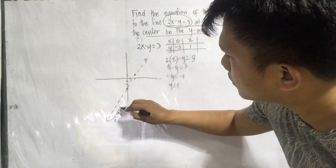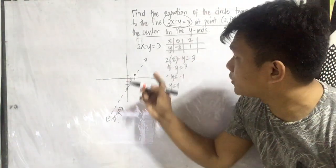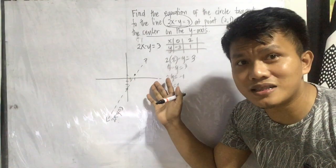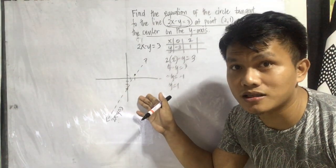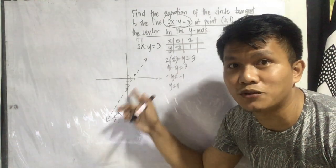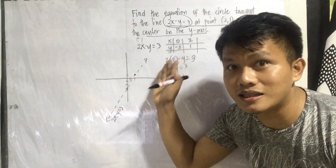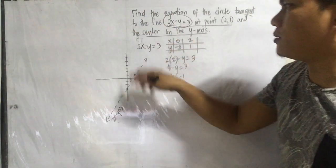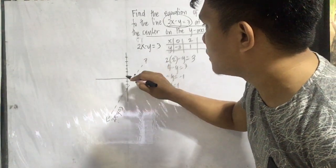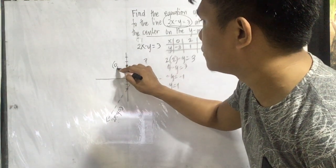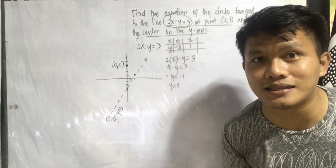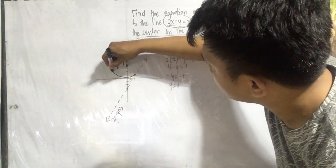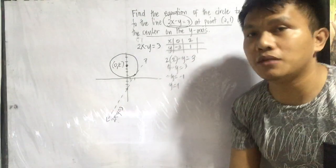We have to take note that when we say tangent, it just touches the circle at exactly one point. From our graph, we can say that the center is not lying on the negative y-axis, because if the center lies there, the line will not be a tangent anymore — it will intersect the circle and become a secant. So our center lies on the positive y-axis. Let us assume our center is somewhere there.